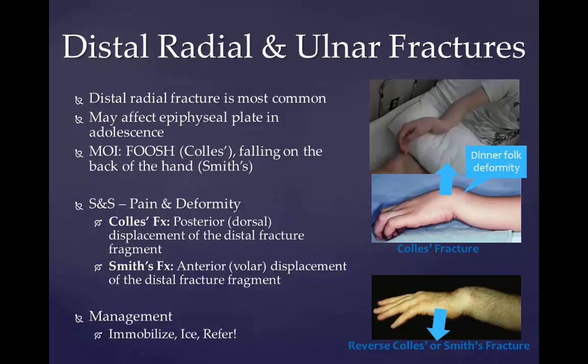A fracture of the forearm can be classified as to whether it involves only the ulna, which is known as an ulnar fracture, only the radius, which is a radial fracture, or both, which is a radial-ulnar fracture. Fractures of the distal forearm are most likely to occur at the radius. In young patients, the epiphysial plate may be the site of fracture.